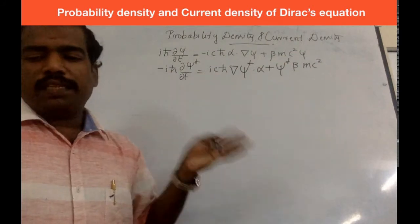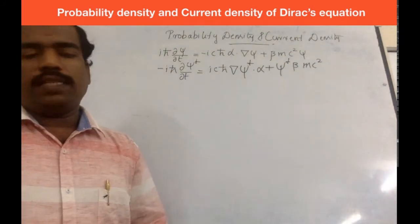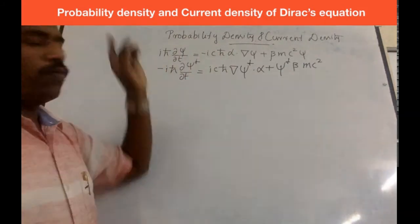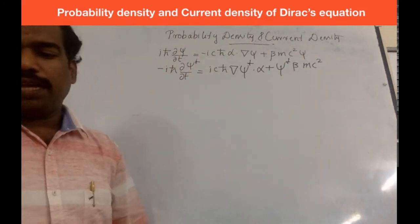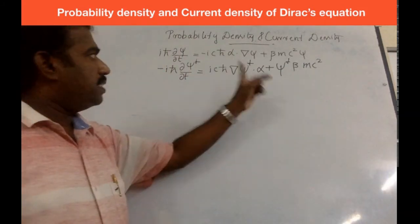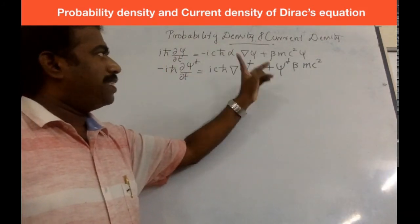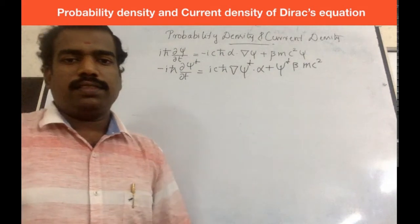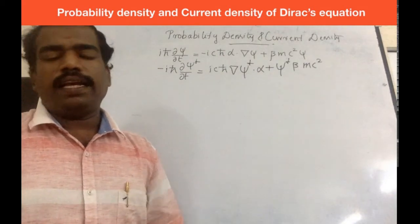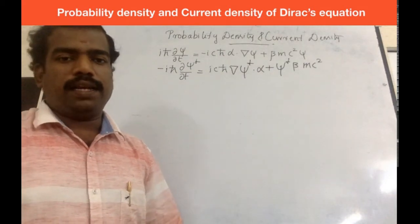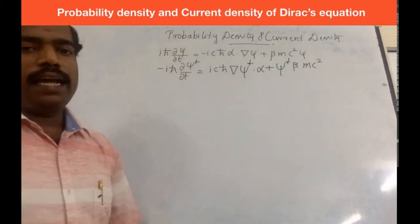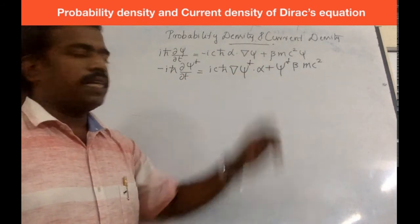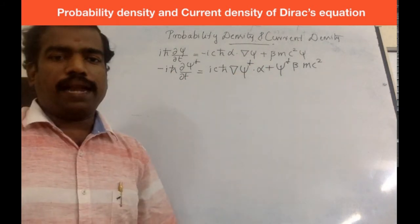Now we have the same operation. First, multiply the original Dirac equation with psi-dagger from the left. And multiply the Hermitian conjugate equation with psi from the right.